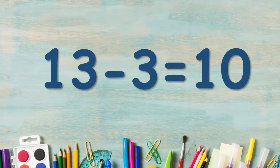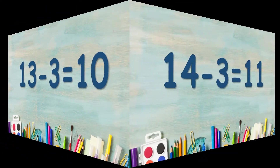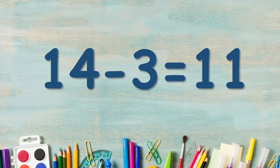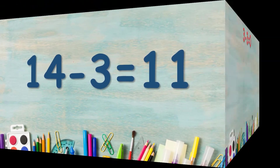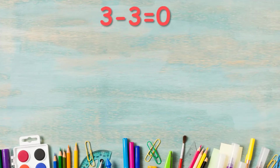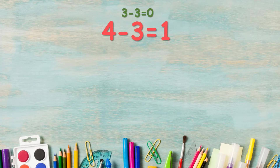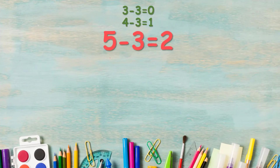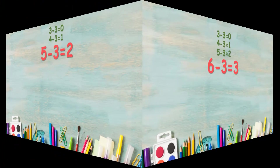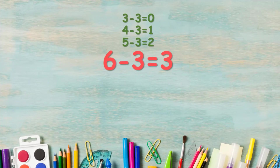13 minus 3 is equal to 10. 14 minus 3 is equal to 11. Let's repeat: 3 minus 3 is equal to 0. 4 minus 3 is equal to 1. 5 minus 3 is equal to 2. 6 minus 3 is equal to 3.